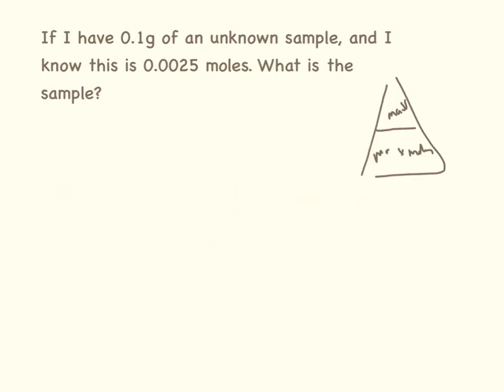And a nasty one to finish us off with. If I have 0.1 grams of an unknown sample and I know this is 0.0025 moles, what is the sample? So looking at our formula triangle, we're looking to find the molecular mass, so I'll cover that up. What we are left with is mass divided by moles. So that is 0.1 divided by 0.0025. Let's put that in the calculator. And I get the answer of 40.